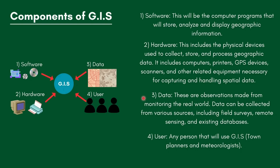The third component of GIS is data — these are observations made from monitoring the real world. Data can be collected from various sources, including field surveys, remote sensing, and existing databases. Remote sensing and databases are important concepts that they could ask you to define, which we will cover in the next few slides.